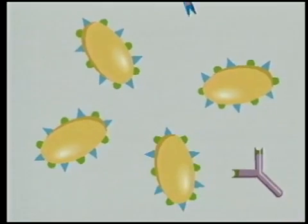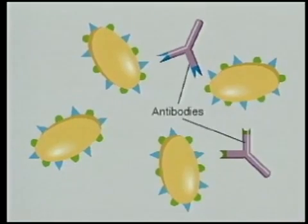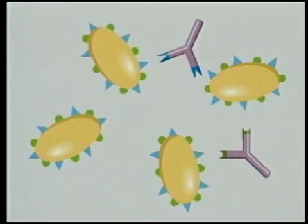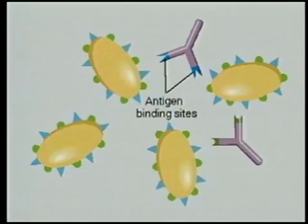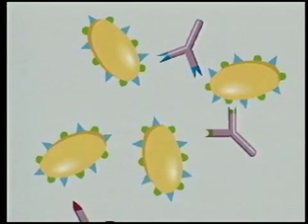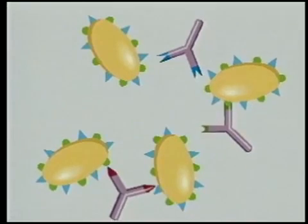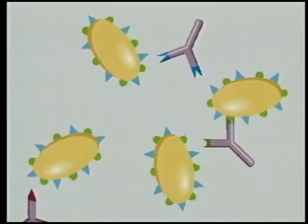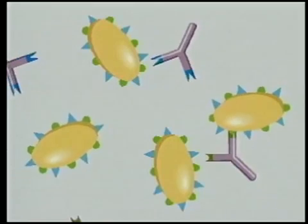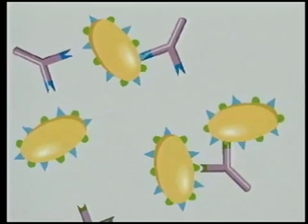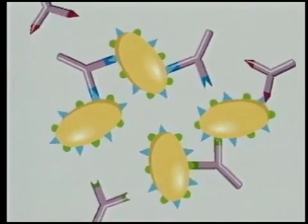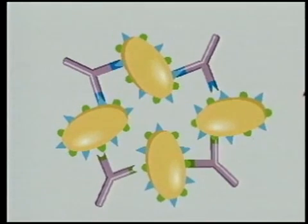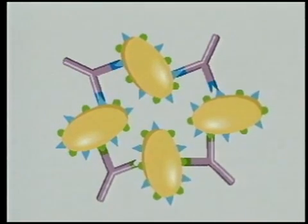When pathogens enter the body, they encounter antibodies. Antibodies are Y-shaped proteins with sites on their tips that bind to specific antigens. The body makes many different kinds of antibodies, and each antibody will bind only to a specific antigen. Because each antibody has two binding sites, clumps of antigens and antibodies can begin to form.